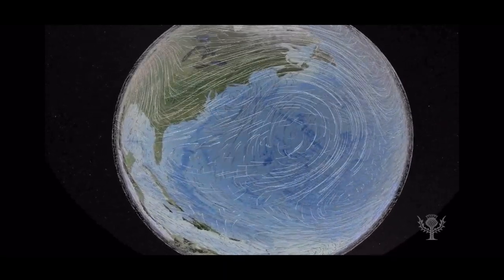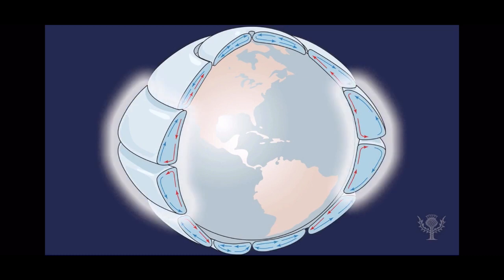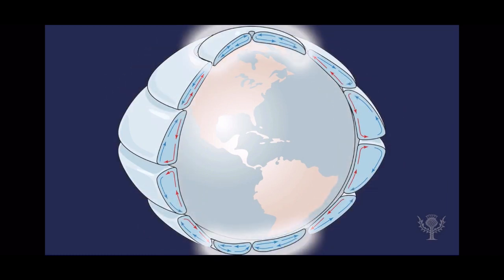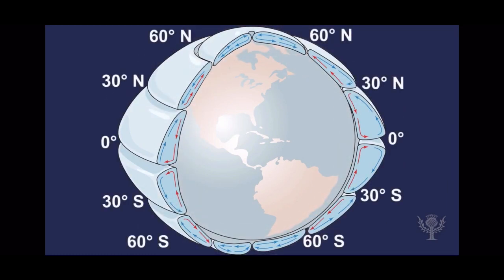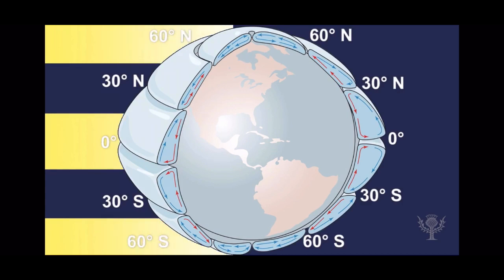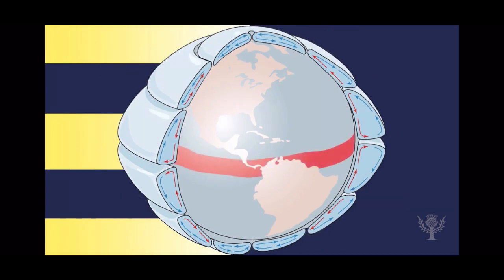The northern and southern hemispheres each have three mirrored cells based on latitude. The sun warms these cells differently. Air nearer to the equator receives more continuous, direct heat than air near the north and south poles.